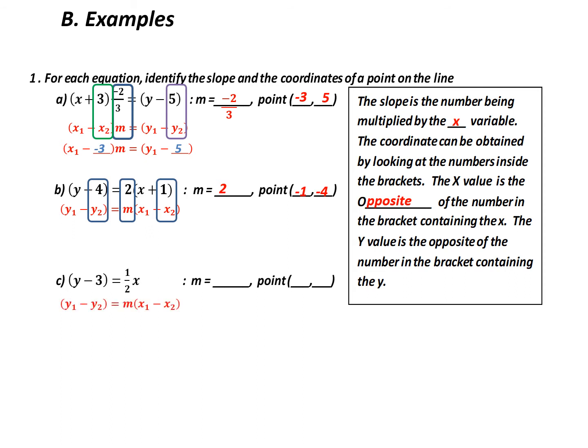Let's try part c. My base equation has m and the x values on the right-hand side. What matches up with m? That's one-half — so my slope is one-half. Now for the x value: there is nothing there in the original equation, so my x value must be 0. For the y values, what would I subtract to get y minus 3? That would be positive 3. So my final answer: slope of one-half and the given point is (0, 3).